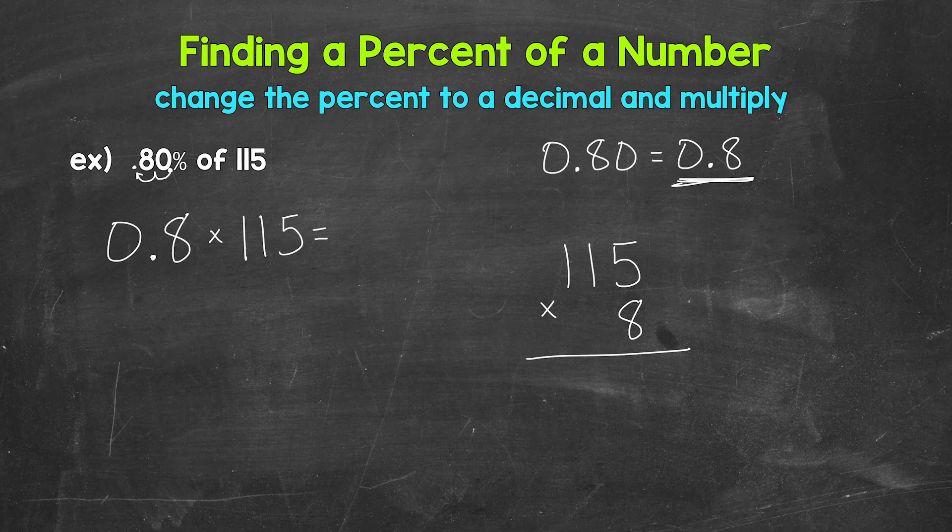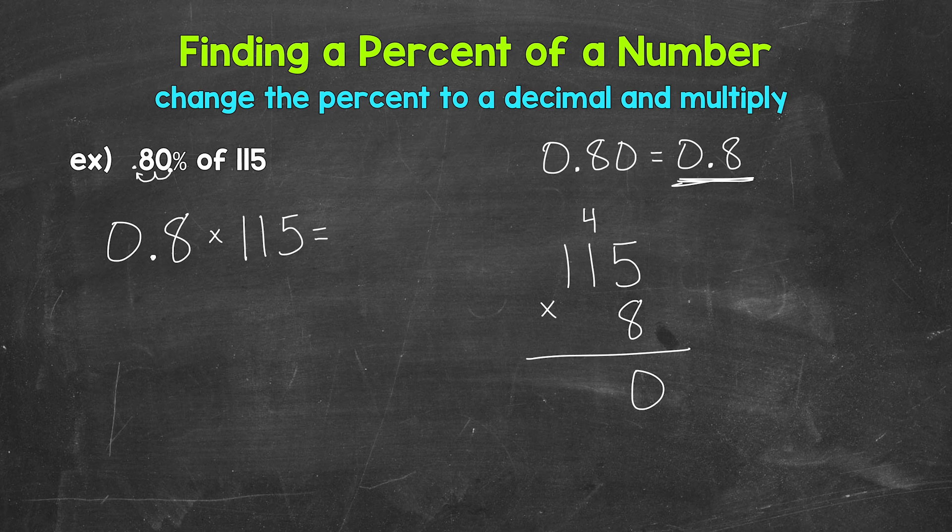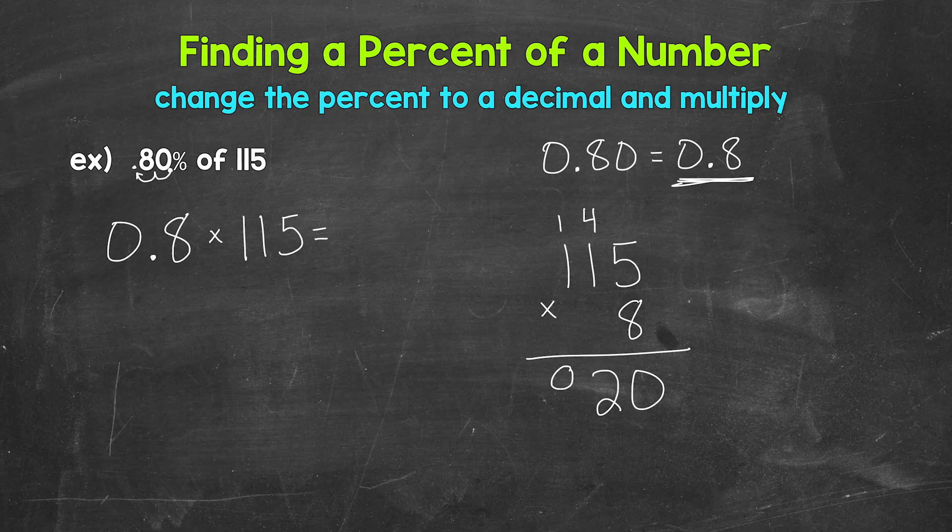8 times 5 is 40. 8 times 1 is 8, plus 4 is 12. And then 8 times 1 is 8, plus 1 is 9.